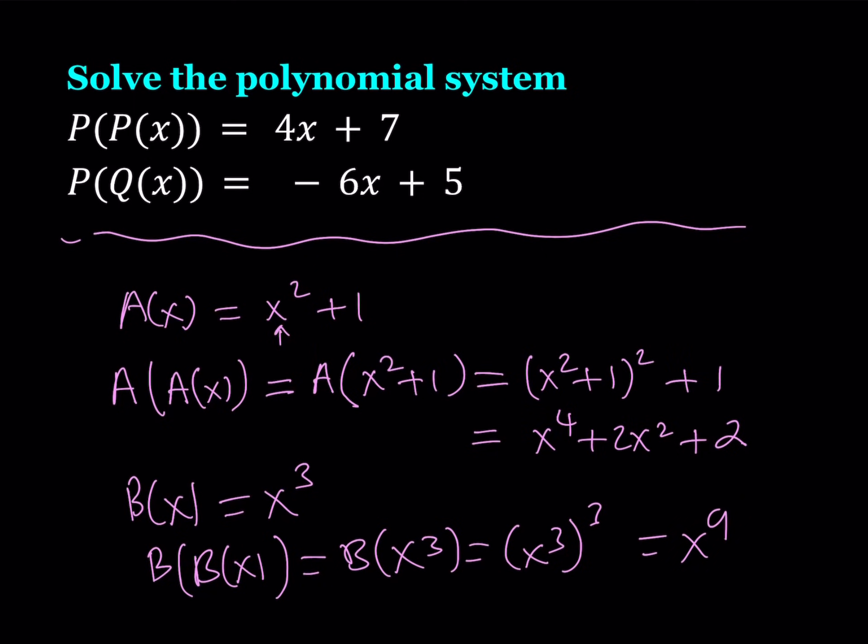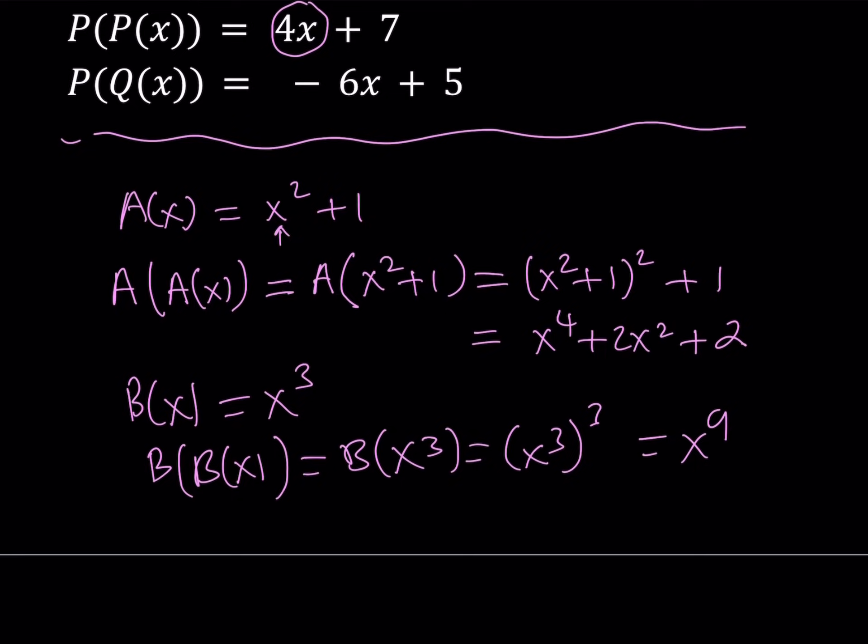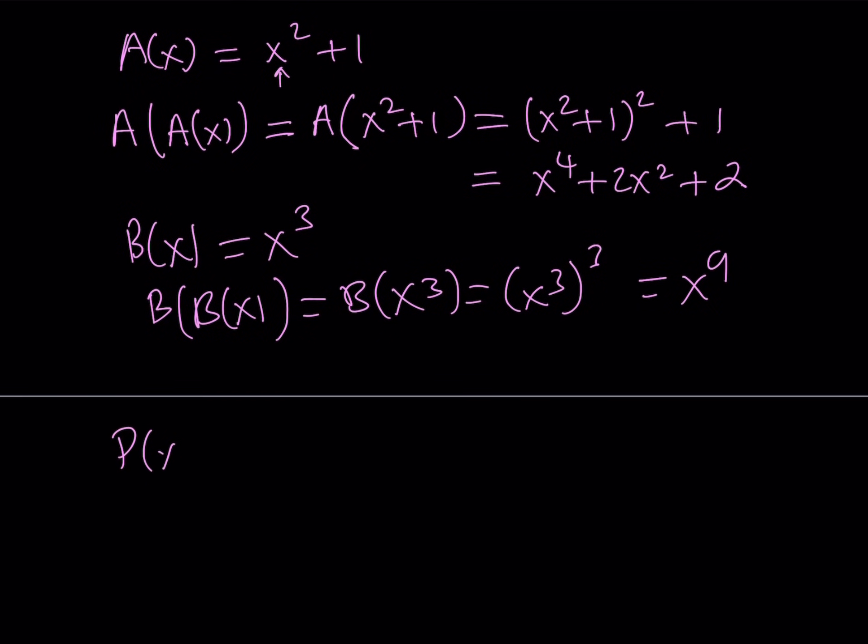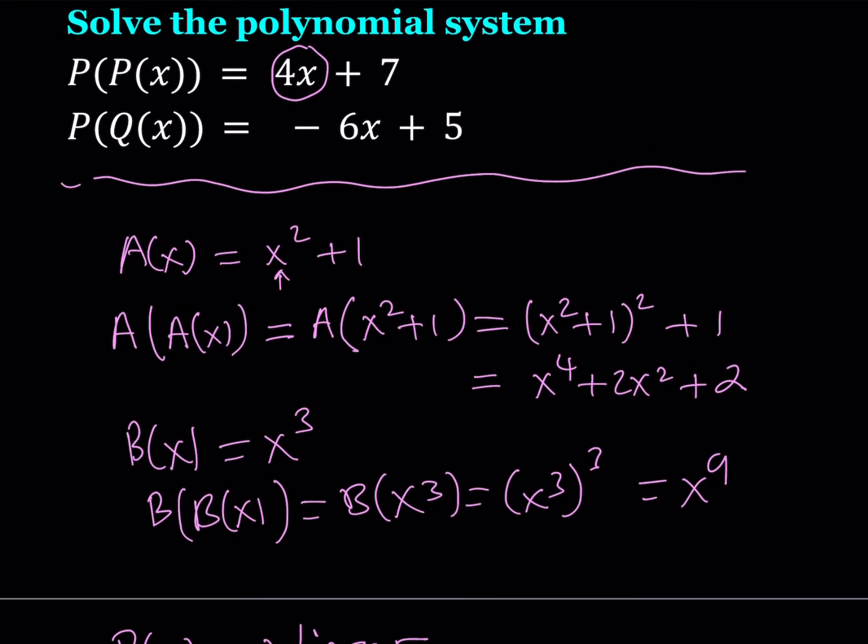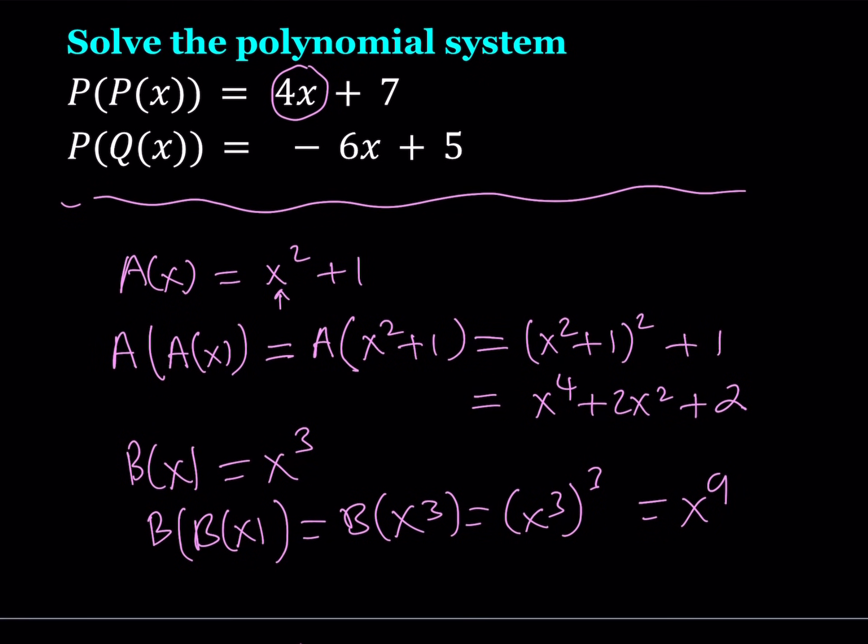Now here we have a linear result. What does that mean? The degree of this polynomial is 1 and the square root of 1 is 1. That means P of X needs to be linear. That's the first assumption we have to make. Otherwise we'd have to go through infinitely many possibilities and obviously none of them is going to work except for the linear case.